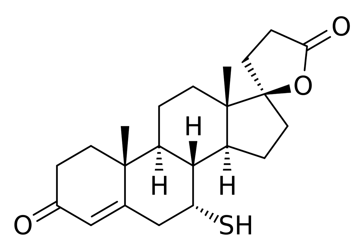7-alpha-TS and 7-alpha-TMS have been found to possess approximately equivalent affinity for the rat ventral prostate androgen receptor (AR), relative to that of spironolactone. The affinity of 7-alpha-TS, 7-alpha-TMS, and spironolactone for the rat prostate AR is about 3.0 to 8.5% of that of dihydrotestosterone (DHT).